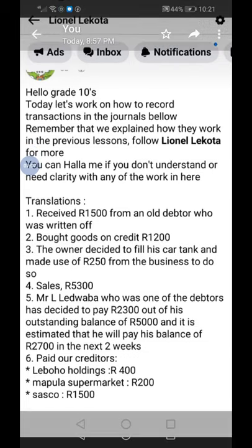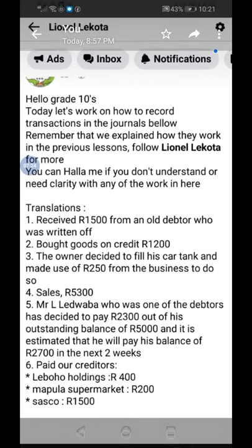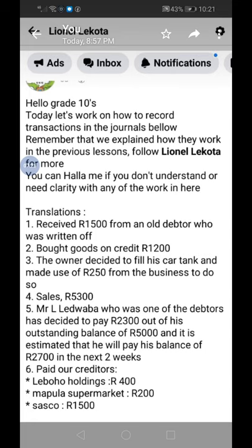Number five: Mr. Ludobo, one of the debtors, has decided to pay 2300 — this goes under the cash receipts journal. His outstanding balance is 5000, but we don't record that. The estimated 2700 to be paid in the next two days we will only record when we actually receive it. For now, we record only 2300 under the CRJ.